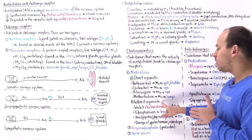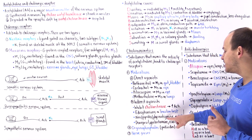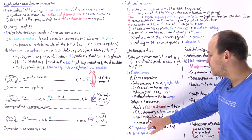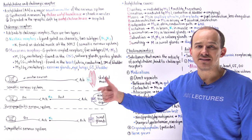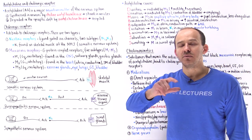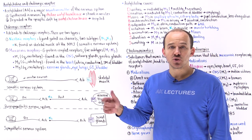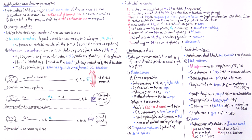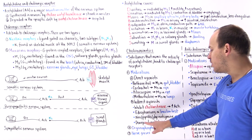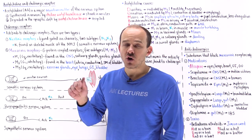Indirect agonists inhibit cholinesterase, increasing ACh. Medications include edrophonium, neostigmine, pyridostigmine, and physostigmine — these all end in '-stigmine.' Neostigmine and pyridostigmine are very similar and are both used in the treatment of myasthenia gravis. Physostigmine is the only one that actually crosses the blood-brain barrier, allowing it to penetrate the central nervous system. For that reason, physostigmine can be used in patients who have atropine toxicity or anticholinergic toxicity. Additionally, donepezil, galantamine, and rivastigmine can all penetrate into the central nervous system and are used in the treatment of symptoms of dementia caused by Alzheimer's disease.